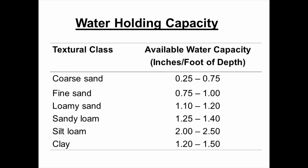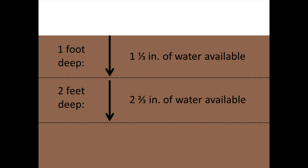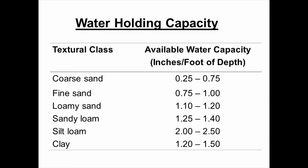Water holding capacity is another important physical property. We can estimate it by understanding the textural class. For example, sandy loam holds about 1.25 to 1.4 inches of available water per foot of root zone depth. If the roots go down two feet, you can double that estimate, giving you a useful estimation of how often irrigation would be required.